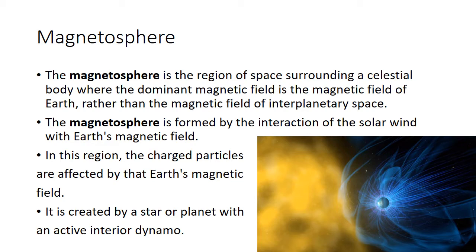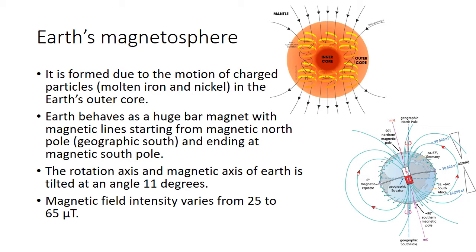In our planetary system, good magnetic fields are found in Earth, Mars, and Jupiter. Now let us look into how the magnetosphere of the earth works. The magnetosphere of the earth was formed due to the motion of charged particles such as iron and nickel in the earth's outer core. The earth behaves as a huge bar magnet with magnetic field lines starting from the north pole and ending at the magnetic south pole.